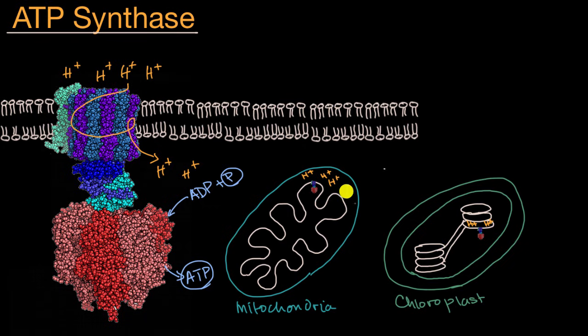In mitochondria, the hydrogen ions, these protons, the concentration builds up in the intermembrane space, right over here, because of the electron transport chain. And we study that in other videos.